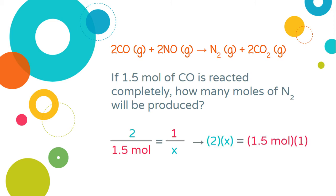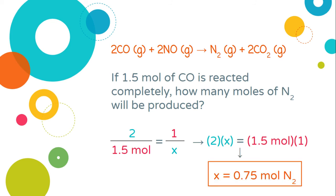After we finish our cross multiplication, we're going to have 2x equals 1.5 moles times 1. To get x by itself, we need to divide both sides by 2, which means x here is going to equal 0.75 moles, which tells us how much nitrogen could be produced from 1.5 moles of carbon monoxide.